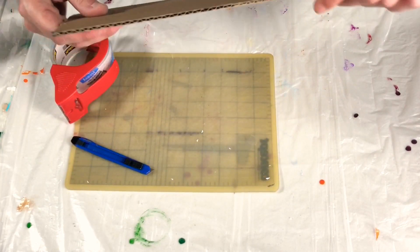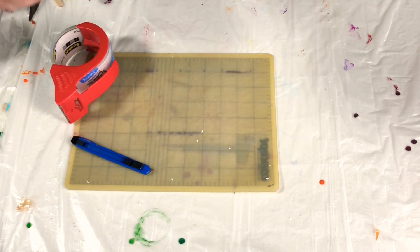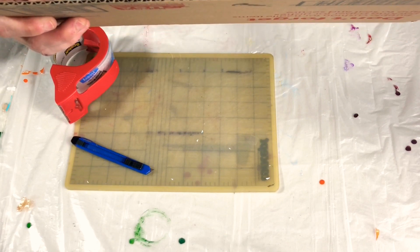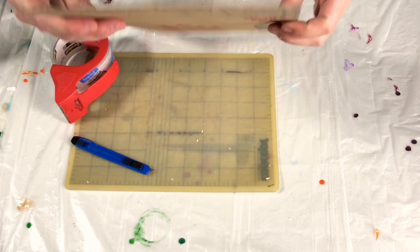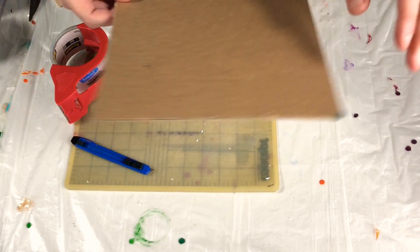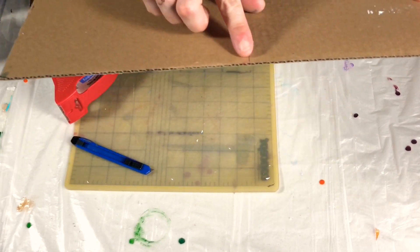The first thing you want to do is look at your cardboard. The cardboard runs a certain way and it bends easier in one way than it does the other way, so make sure that your cardboard is lined up so that it's easy to bend.